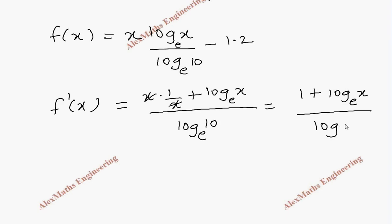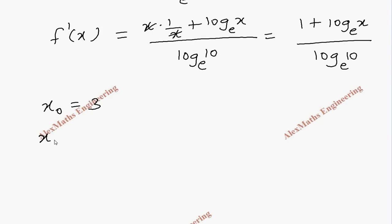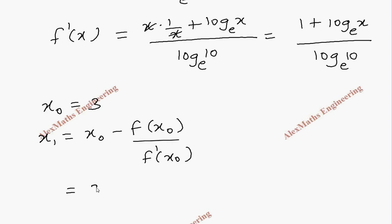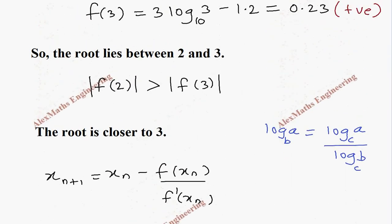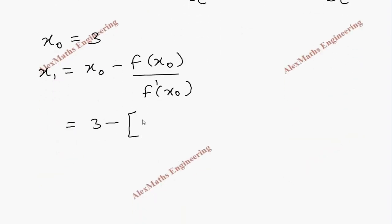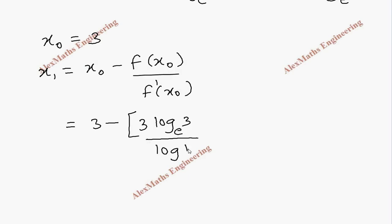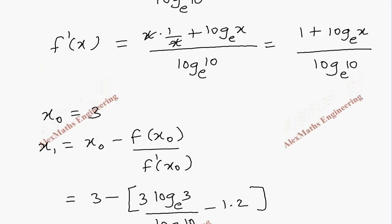Since the root is closer to 3, we take x₀ = 3. We need to find x₁ by Newton-Raphson's formula: x₁ = x₀ - f(x₀) / f'(x₀). So x₀ = 3, and f(x₀) = 3·ln(3)/ln(10) - 1.2 in the numerator.